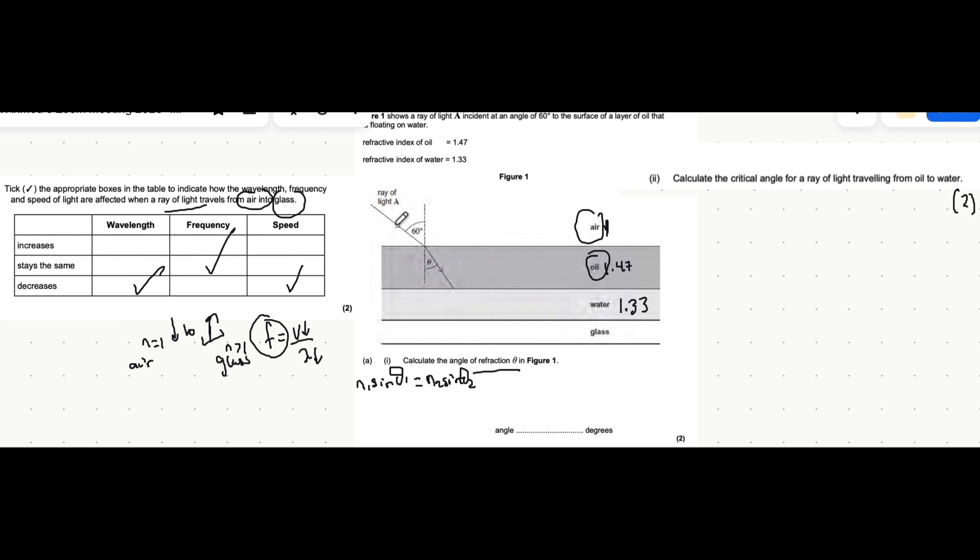N1 is the refractive index of where light is coming from, which is air in this case. Sine of theta 1, which is the angle that it makes with the normal when it's coming in, which we call the angle of incidence, is equal to N2, which is the refractive index of where the light is going to, which is oil, multiplied by sine theta 2, which is the angle of refraction that's made after refraction happens. That's what we're trying to find.